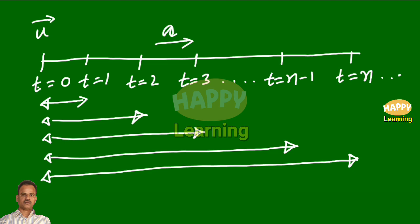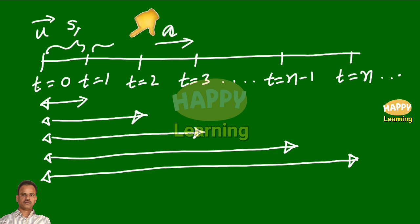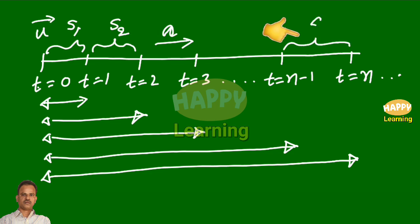What about the displacement in any one second? This displacement is displacement in the first second — only first second, t equal to 0 to t equal to 1. And this value is displacement in the second second, not in two seconds. Displacement in two seconds is different from displacement in the second second. Similarly, this is the displacement in nth second — let us give it the symbol Sn.